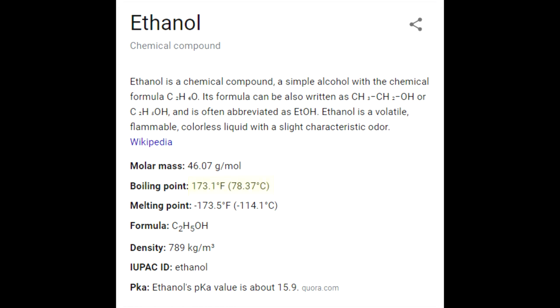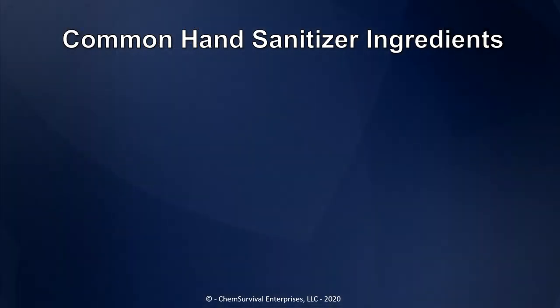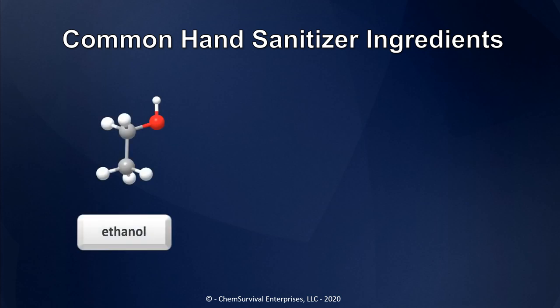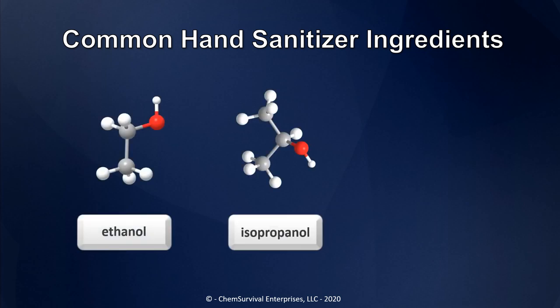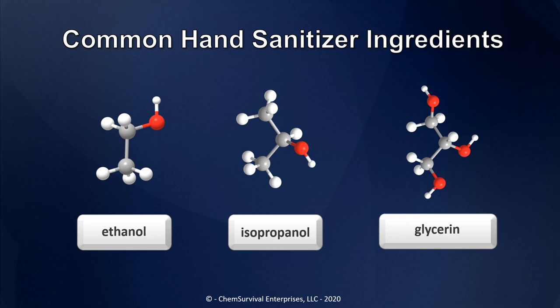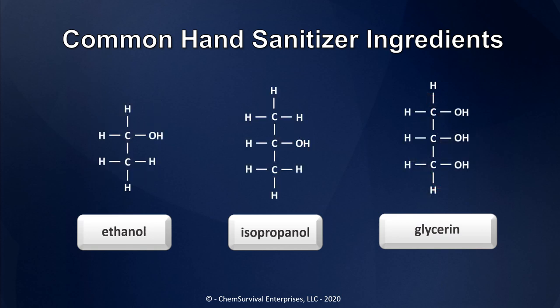And glycerin helps solve this problem. Let's consider regular alcohols like ethanol and isopropanol and compare them to the chemical structure of glycerin. Ethanol and isopropanol are alcohols by virtue of a single OH group — what we call a hydroxyl motif — that each one has. But glycerin is not a simple alcohol. Glycerin is what chemists call a sugar alcohol, and it has way more hydroxyl groups: three per molecule to be exact.